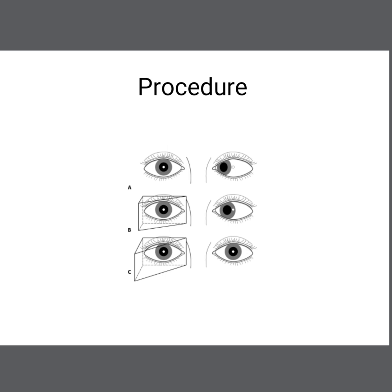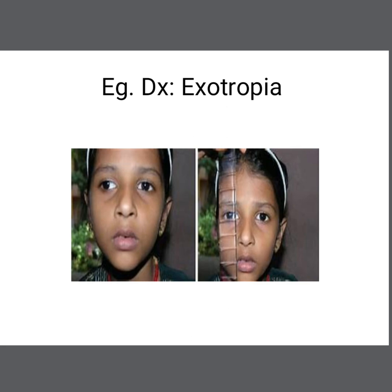So the amount of prism at which we get two symmetrical corneal reflexes is the amount of the ocular deviation. Here the child is having exotropia in the right eye, and in the second figure, when we put the prism bar and reach the exact amount of the ocular deviation, the two eyes become symmetrical.